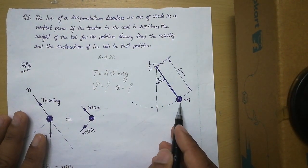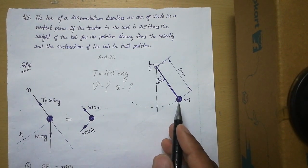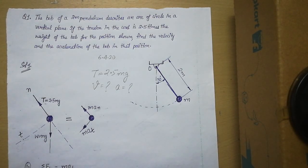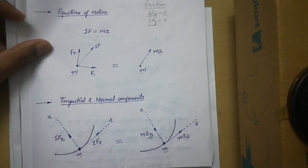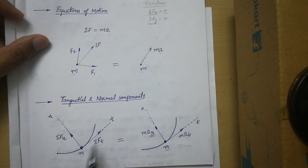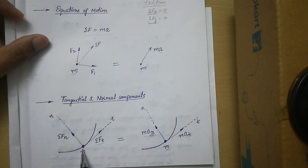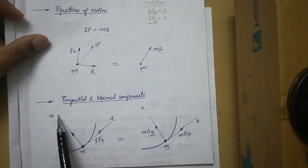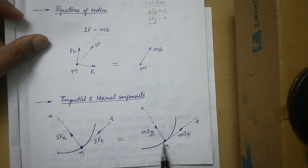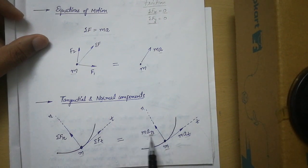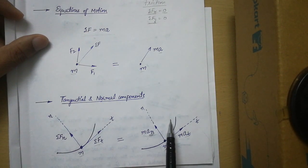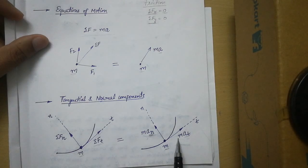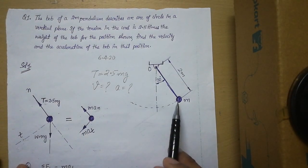When I discussed the theory of kinetics of particles, I talked about tangential and normal components. If a particle moves along a curved path, it is under the effect of two forces: one tangential force and one normal force. This gives two types of accelerations — tangential acceleration and normal acceleration. We drive two equations: summation Ft equals m·at, and summation Fn equals m·an. We will use this concept in this problem.